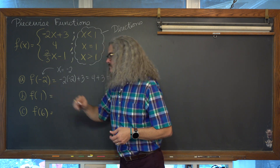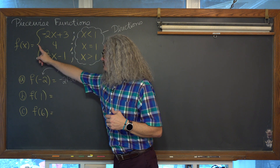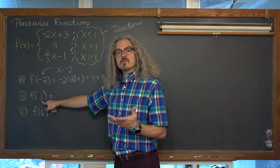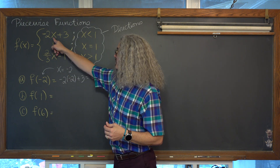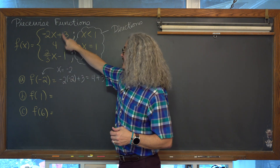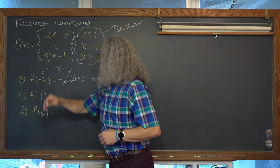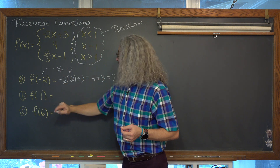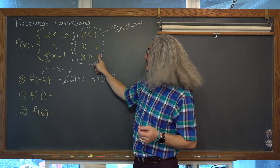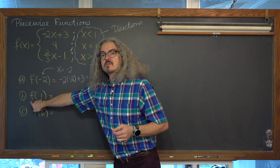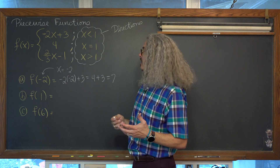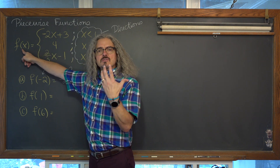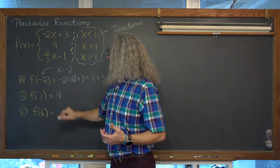f of 1: 1 being inside that function notation represents the domain value. Our domain variable is x, that's where all the math is happening, and we're getting out y values. 1 is not less than 1. 1 is not greater than 1. The x value being inserted into this function actually is equal to 1. What's the answer? f of x is 4. f of x function notation is just a fancy way of writing y. f of 1 is equal to 4.